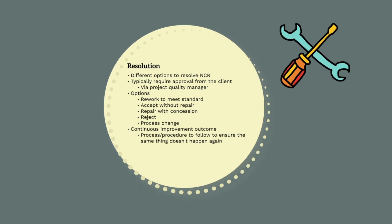The options to close out an NCR include: rework to meet the original standard; accept without repair, basically accepting the defective product; repair with changes to the original requirements — performing some rework but not to the original standard; or reject the submitted proposal, in which case the contractor would need to present another solution to the client. For process NCRs, we would typically need to complete some sort of investigation as to why the quality management process wasn't followed and implement a continuous improvement change to ensure the same quality failures won't happen again.